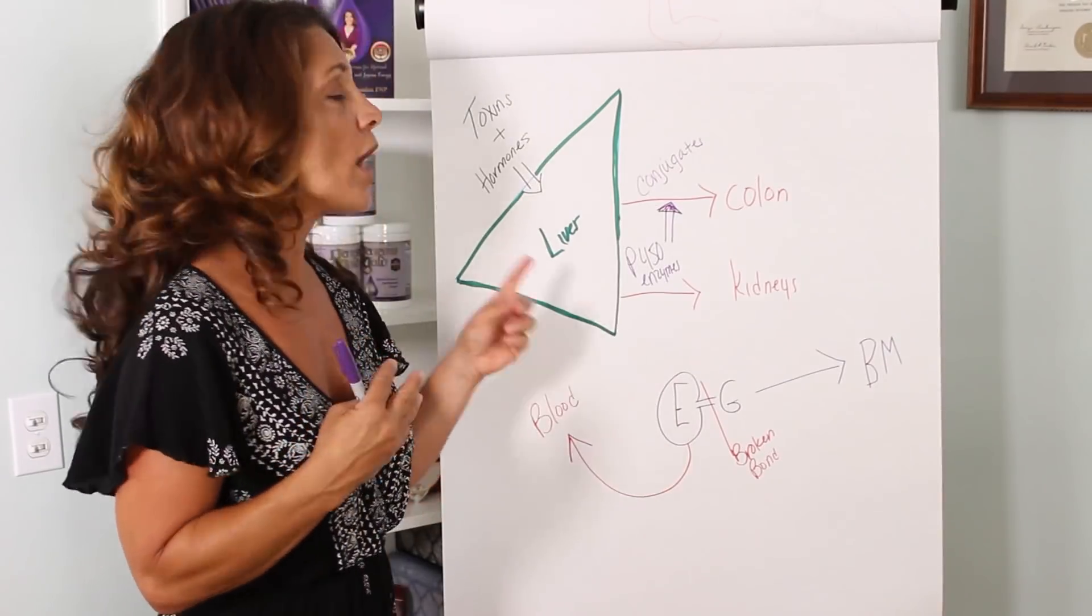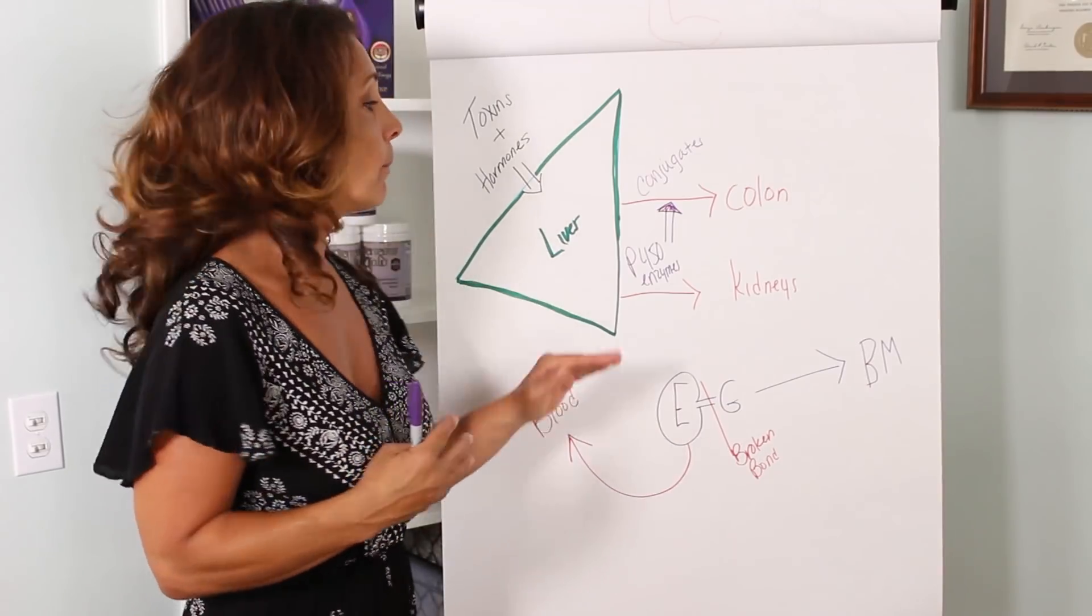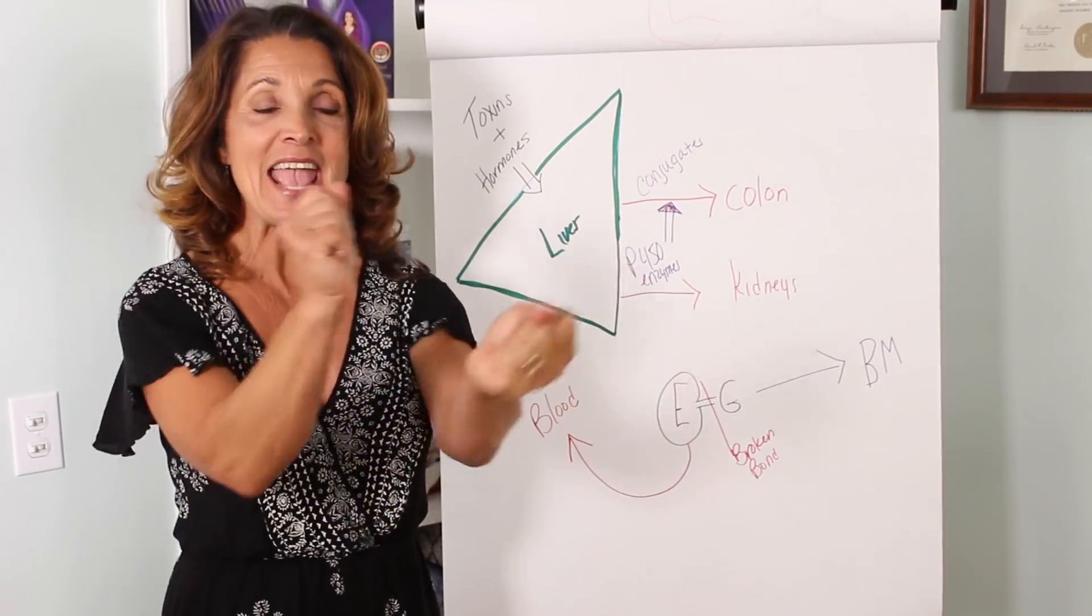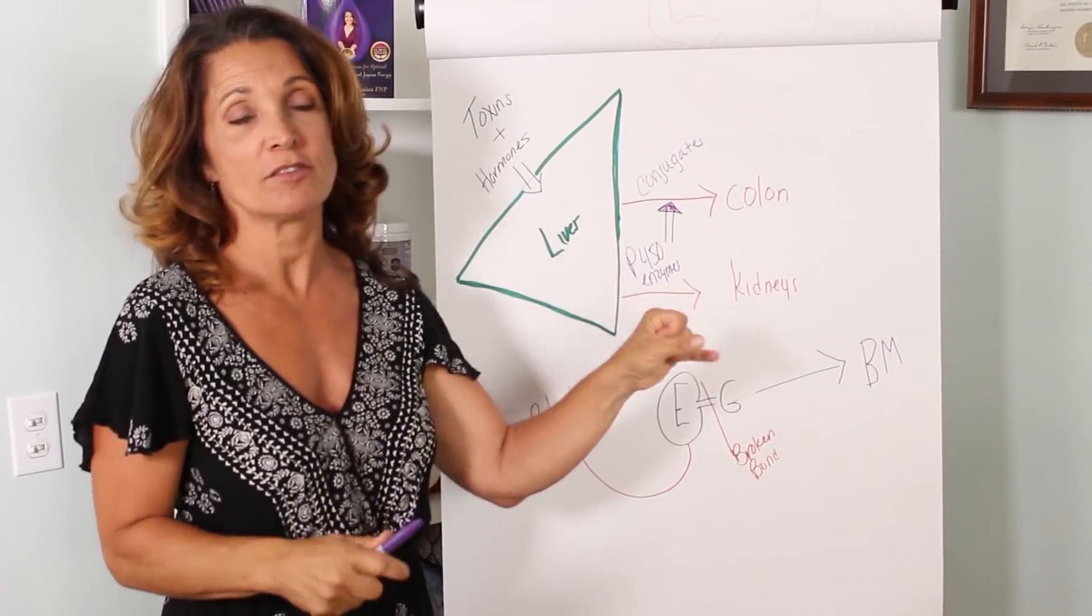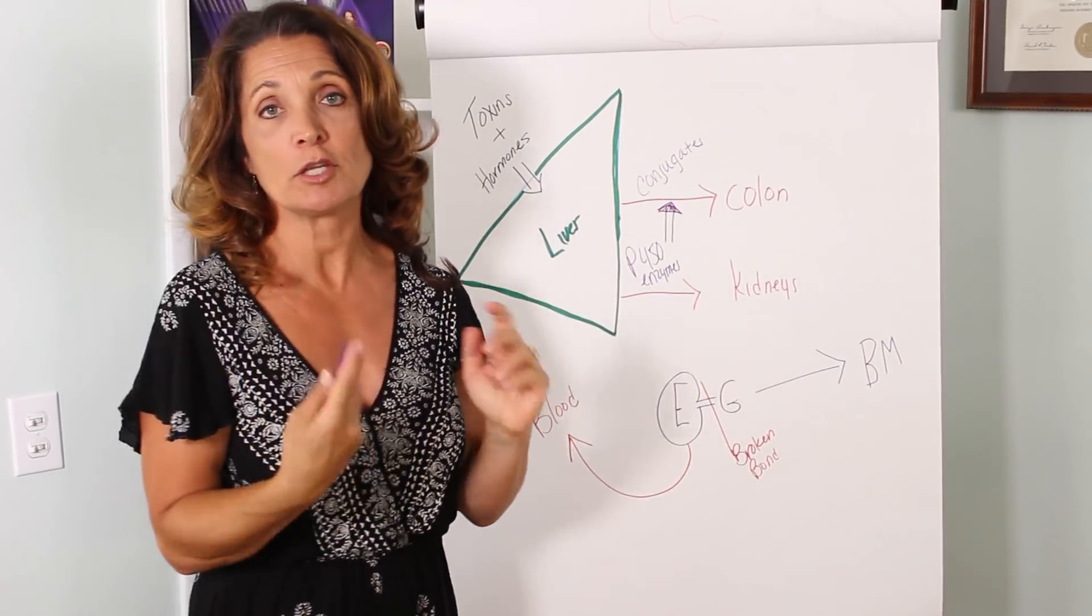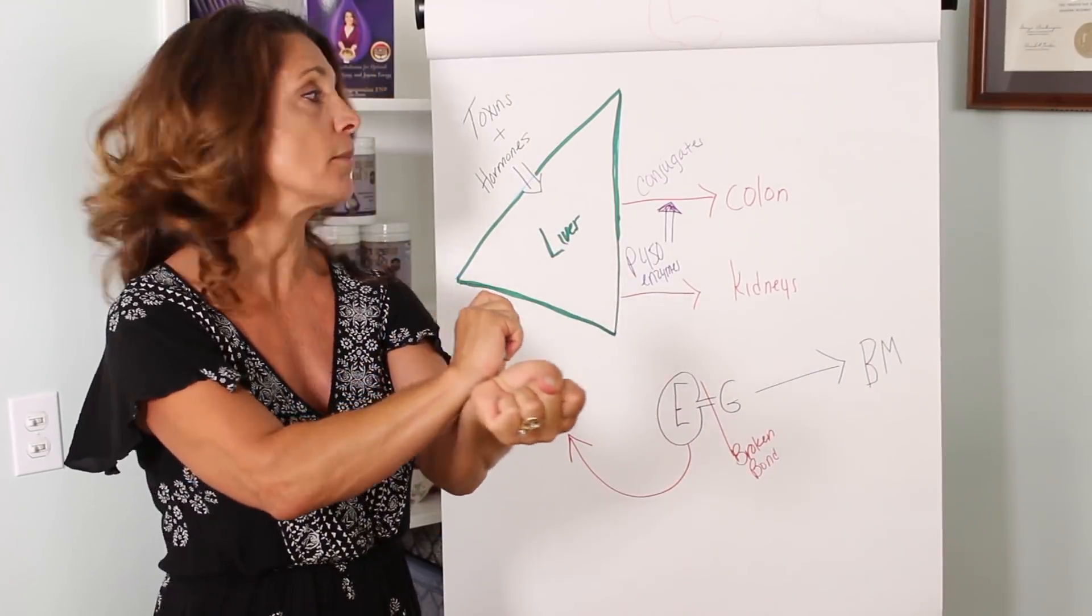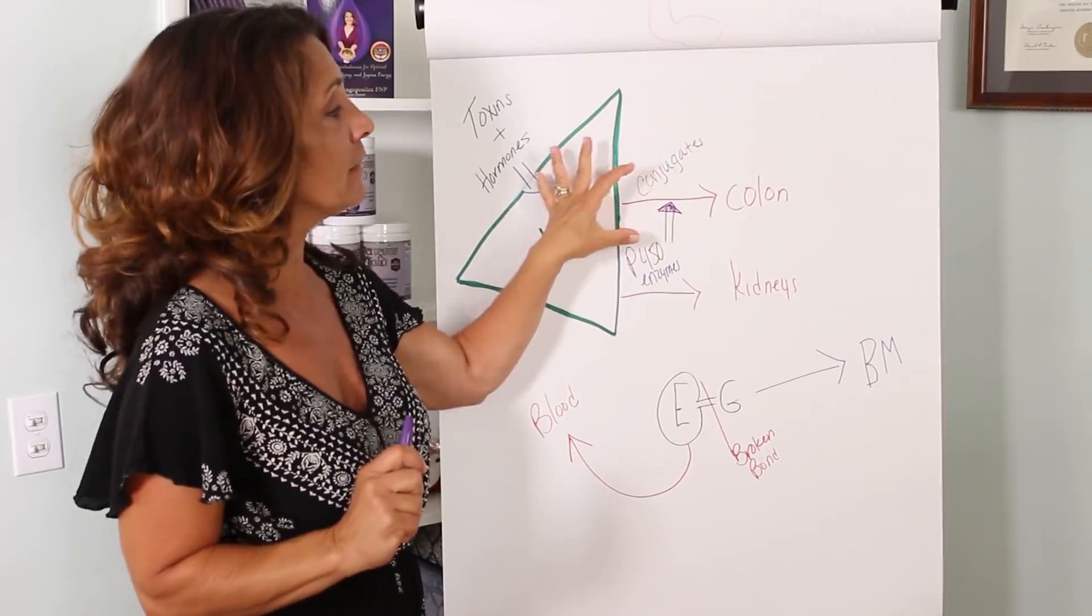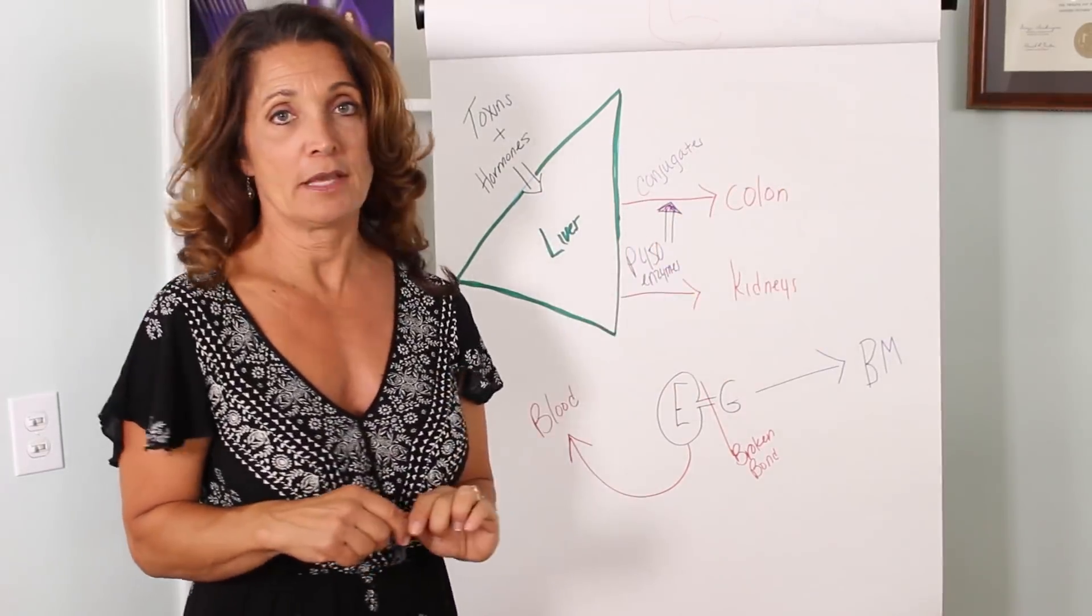Unfortunately, water soluble toxins are way more toxic. So your liver immediately has to handcuff those toxins with what's called conjugates. These are chemicals, usually proteins, that can be something as simple as sulfur that handcuffs the toxins and the hormones to allow your body to then take them out through the colon or through the kidneys.